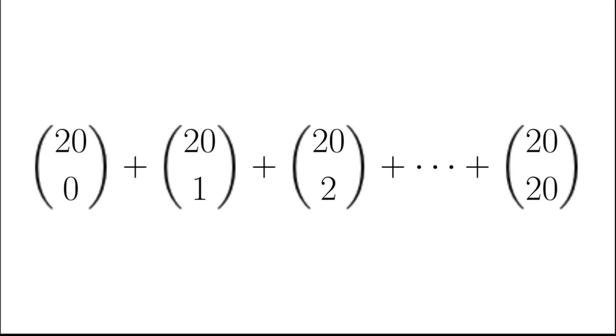In this video, we are going to add up the following binomial coefficients: 20 choose 0, add by 20 choose 1, add by 20 choose 2, all the way up to 20 choose 20.